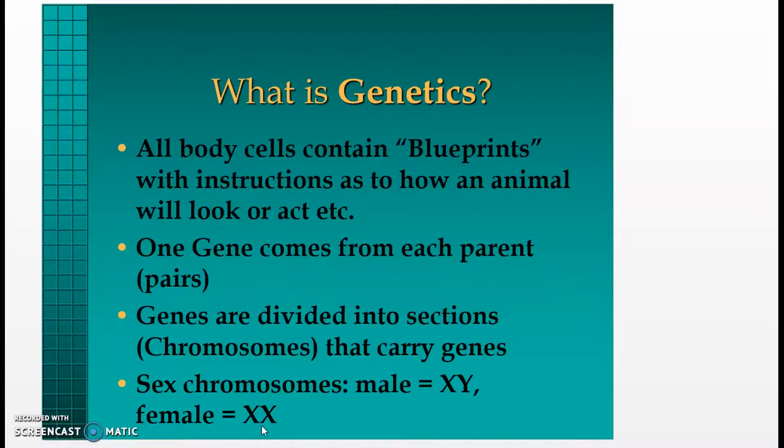What is genetics? All body cells contain blueprints with instructions as to how an animal will look, act, etc. One gene comes from each parent, and there are common pairs. Genes are divided into sections called chromosomes that carry genes — sex chromosomes like the male XY and the female XX.